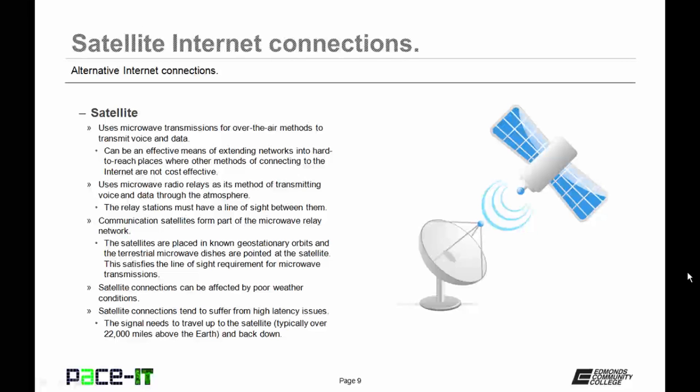Satellite connections can be affected by poor weather conditions, particularly when there's high moisture content in the air — so during heavy rain or snow storms, your satellite service may be interrupted. Satellite connections also tend to suffer from high latency issues, meaning there's a lag. The signal needs to travel from the terrestrial satellite dish up to the satellite, which is typically over 22,000 miles above the earth, and then back down to its destination — and the response travels back in reverse order, which is why latency is an issue. But if your only option is satellite or nothing, satellite works awesome.